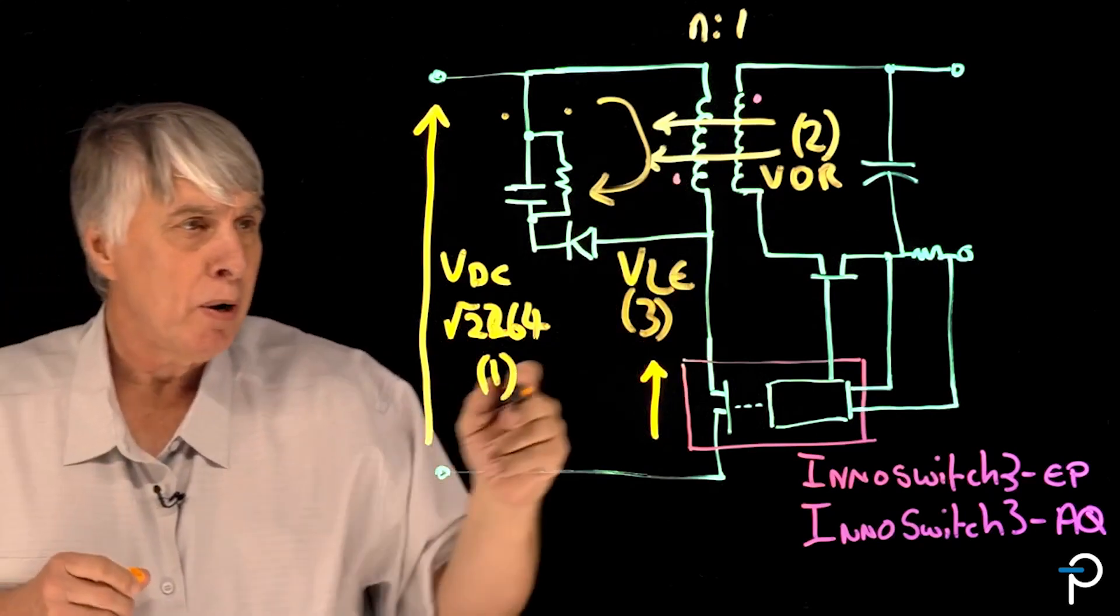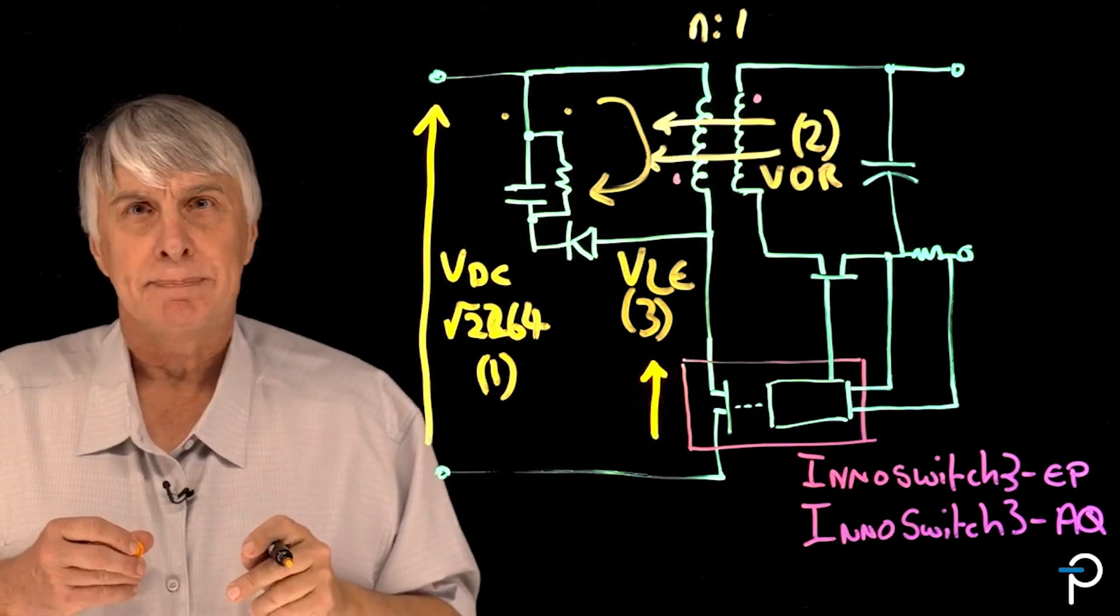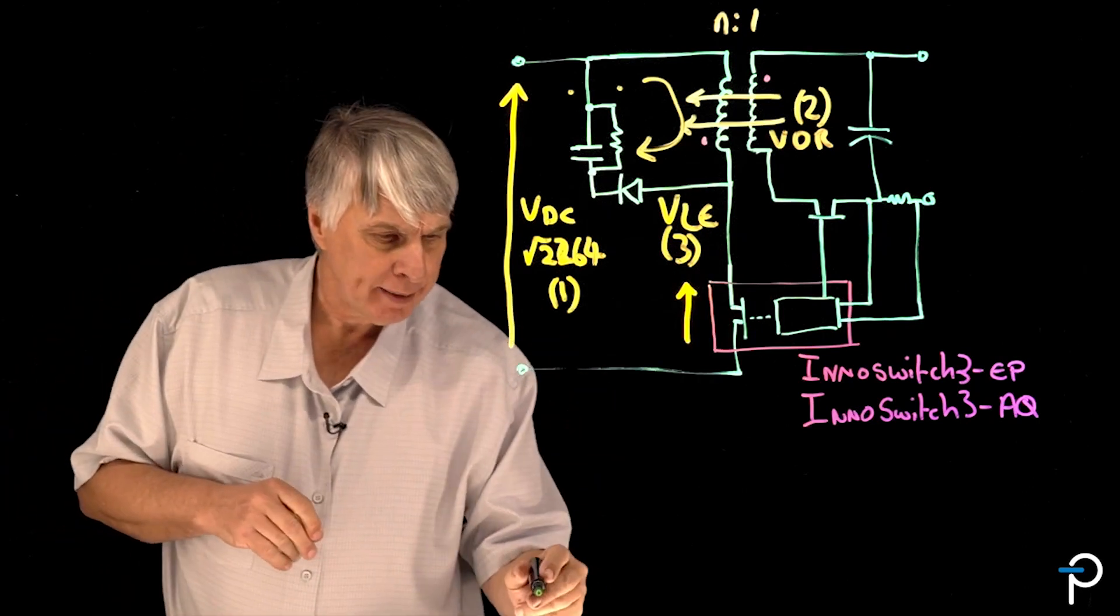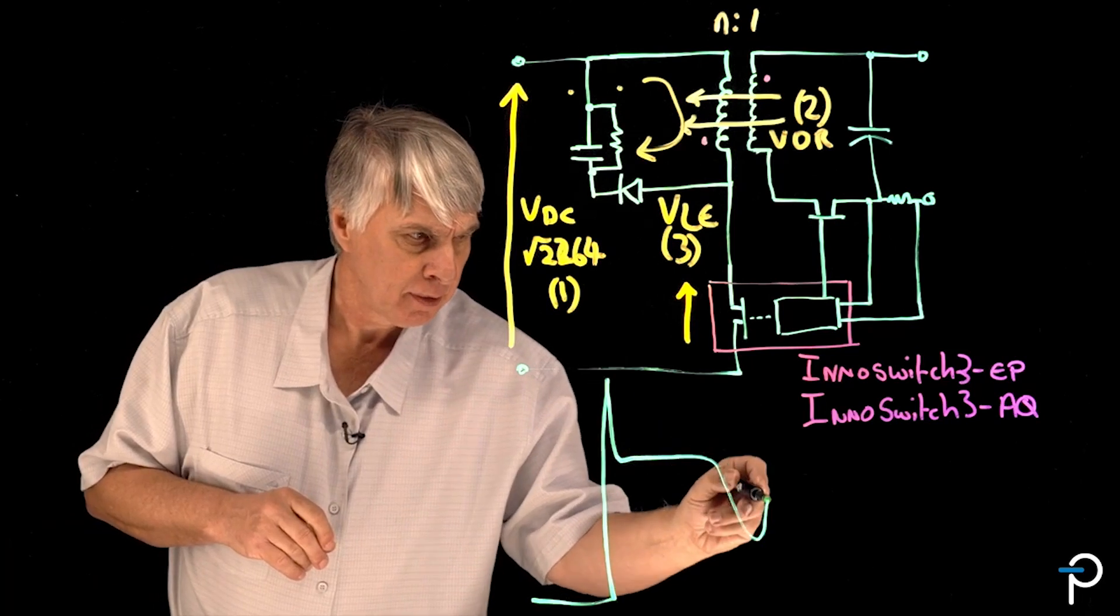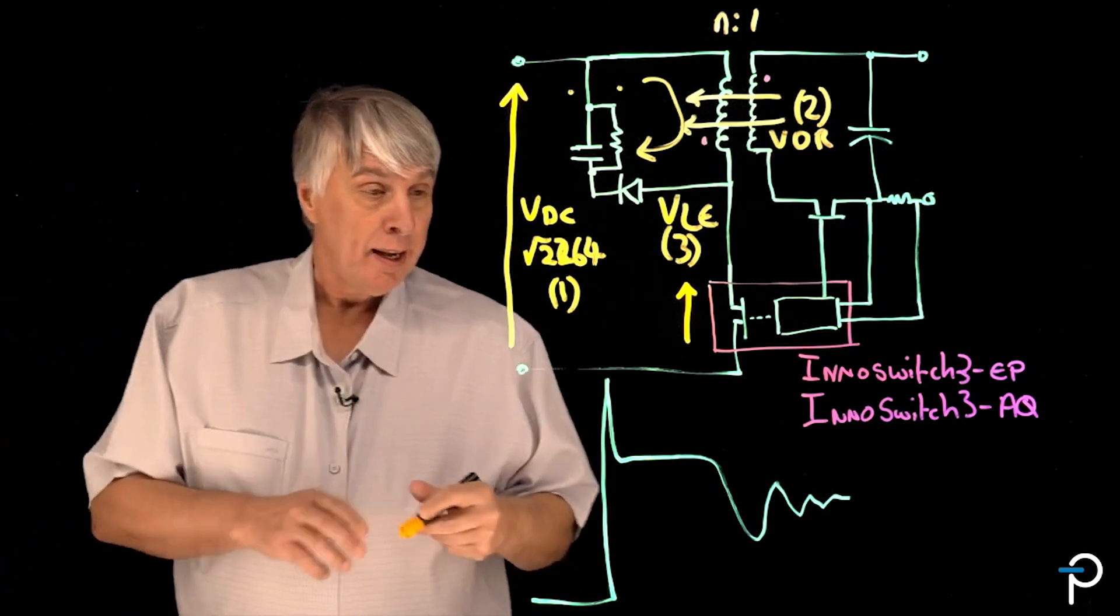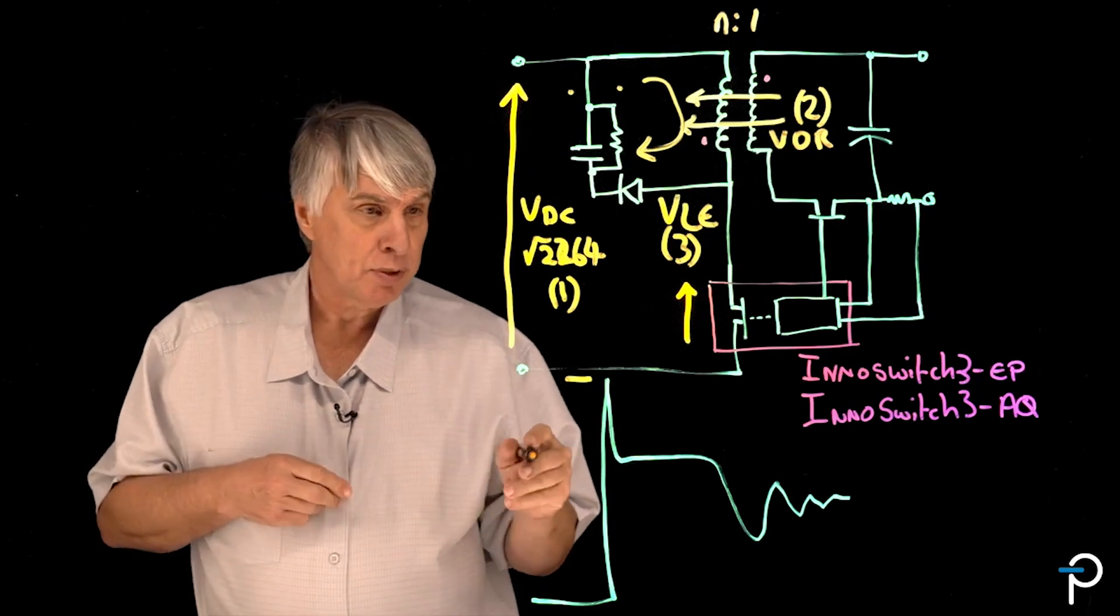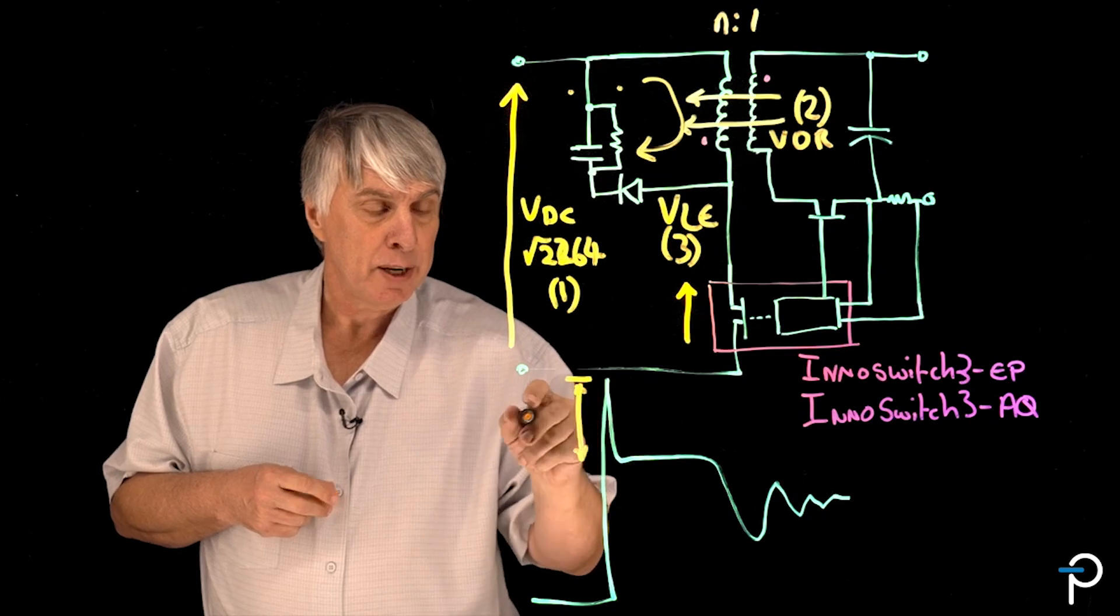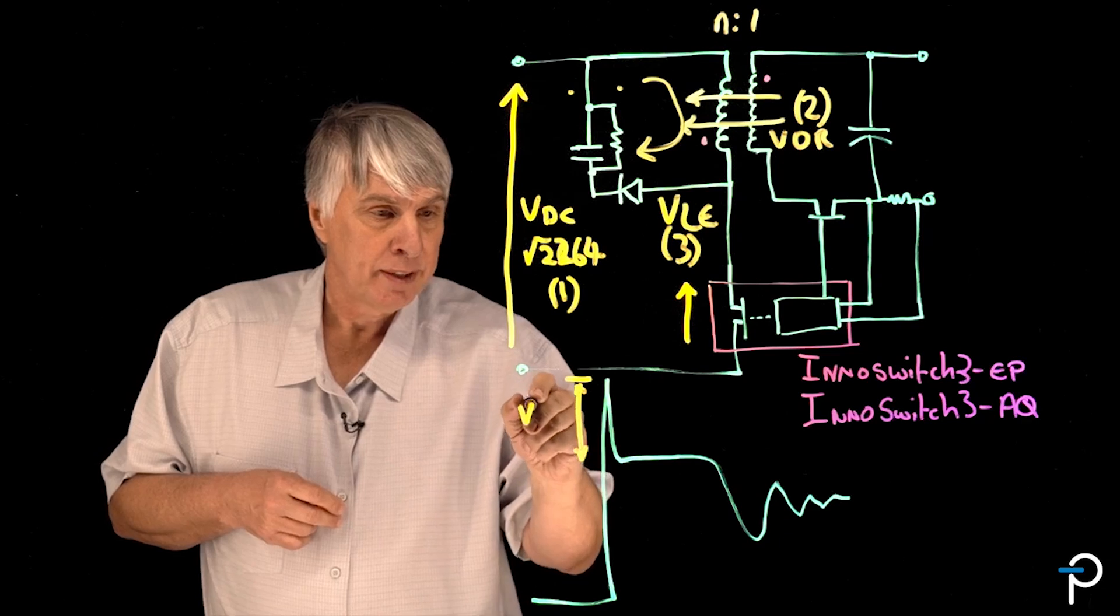Those three elements combine to create the voltage stress on the primary switch on the flyback converter. So let's sketch the switching waveform that we see on the power transistor when it turns off. This is a DCM switching waveform and the voltage stress on the transistor comes from those three elements. We have the leakage inductance developing the spike energy we see on the primary, so we'll call that VLE.